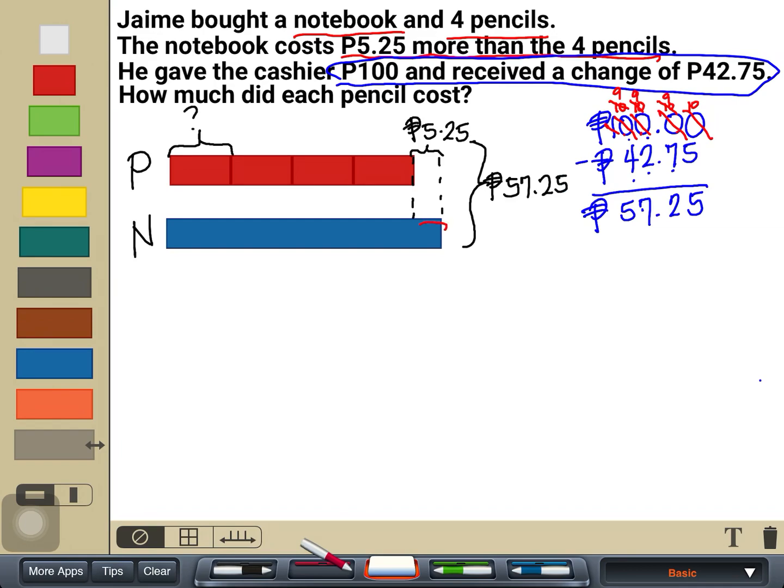How am I going to do that? Well, you can see here that there is an excess right there. And if I remove that excess, I think I can have two equal units already. Let's see if that would work. Let's subtract. Subtracting 57 pesos and 25 centavos minus 5 pesos and 25 centavos. Straightforward subtraction would give you 52 pesos.